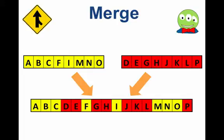Imagine I've got these two sorted lists and I want to put them together. What I need to do is just walk through both of the lists. I can start and compare the first element of each list. The A is smaller, so I put the A in first, and I update my pointer to point to B. Now I'm comparing B and D — B is still smaller, so I put B in my list, it ends up down here.